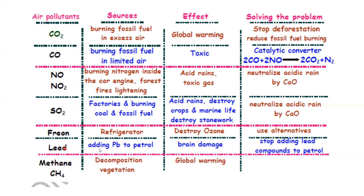Lead compounds are normally added to petrol, but inhaling vapors containing lead can damage the nervous system and brain. We should not add lead compounds to petrol. Methane is produced by the decomposition of organic waste and decaying plant material, and it can also cause global warming. These are the main sources of air pollution, along with their effects and how we can overcome them.